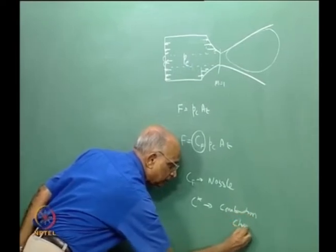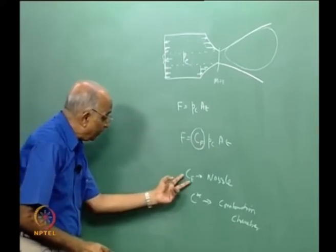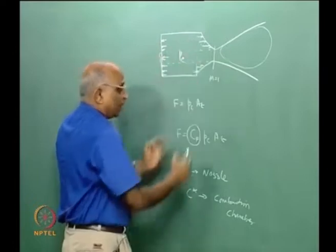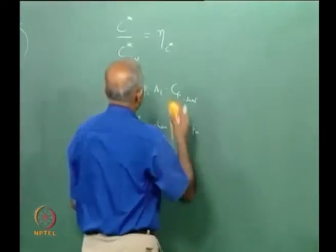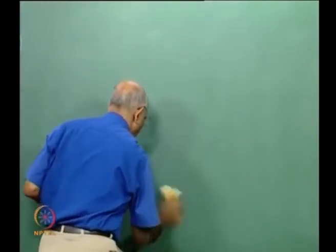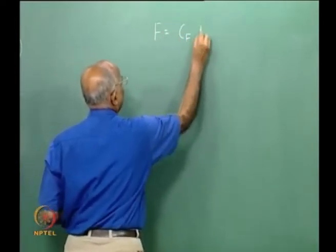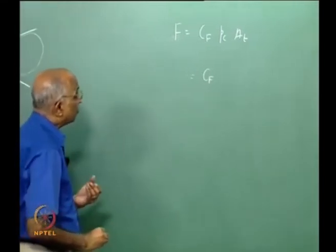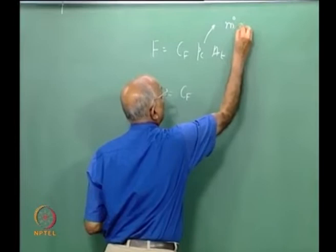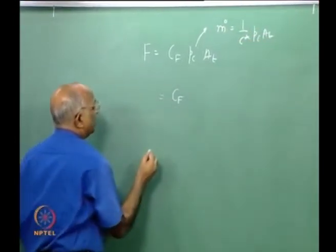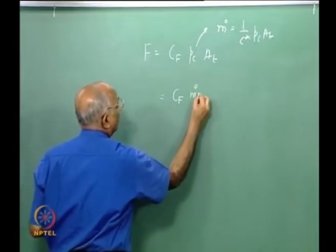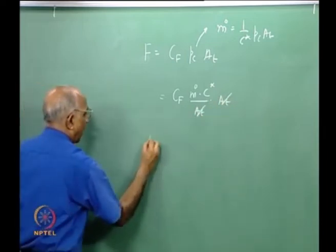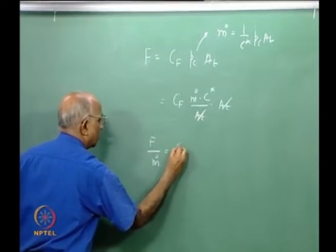The product of Cf and c* gives the net specific impulse (ISP). Thrust = Cf × Pc × At, and since Pc × At = m-dot × c*, we get: Thrust / m-dot = Cf × c*. Since Thrust × time is impulse and impulse per unit propellant mass is specific impulse, the specific impulse of a rocket combines the chamber's capacity to generate high pressure and temperature and the nozzle's ability to expand gases to high velocity.